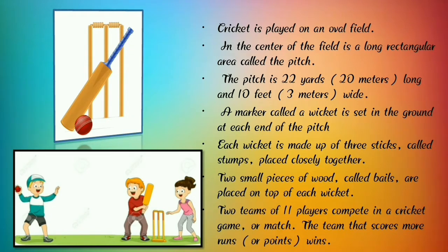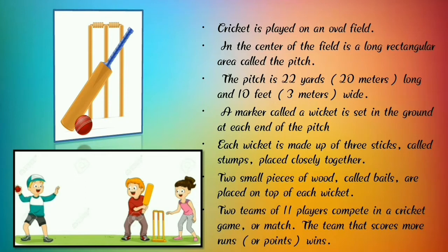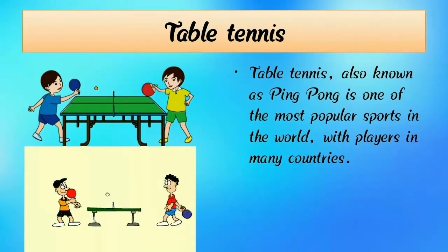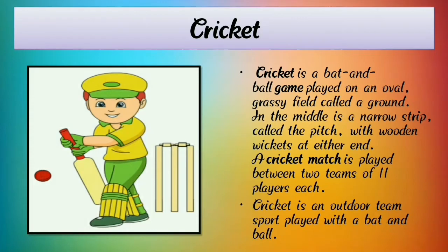Two teams of 11 players compete in a cricket game or match. The team that scores more runs or points wins. Cricket is a very interesting outdoor game played by two teams of 11 players on an oval-shaped ground. Children, you all understand about cricket because cricket is a very interesting game played with bat and ball.